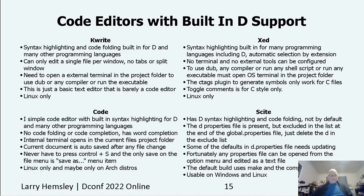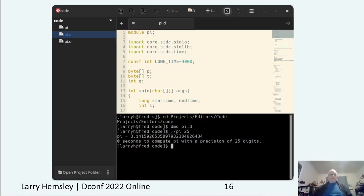The last one on this slide is Cite, available on both Windows and Linux. The D syntax highlighting and code folding are available but not on by default. To use it with D, the 'D' in the exclude list near the end of the global.properties file needs to be deleted to enable the included D.properties file. Some of the defaults in the D.properties file need to be updated. Fortunately, all the property files are easy to edit in text format and can be opened from the options menu. Here's a screenshot of Code — in the terminal you can see the file was compiled and ran with 25 digits of precision.